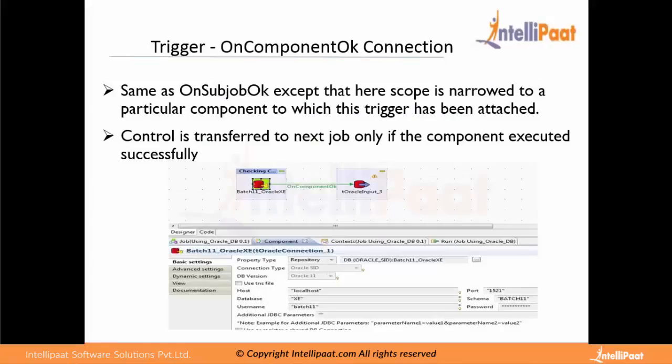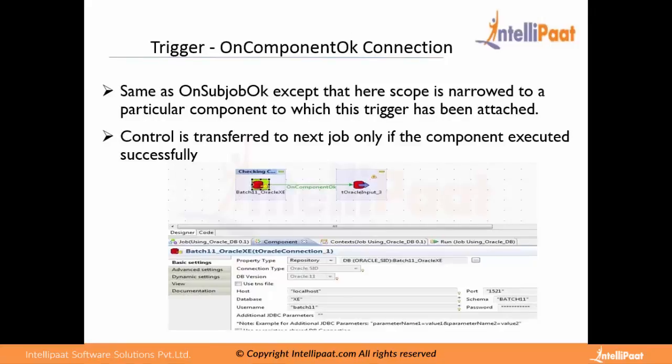Next we have On Component OK. The difference between On Component OK and On Sub Job OK is that On Sub Job OK will initiate the trigger only if all components get executed successfully — even if one component fails, it will not initiate the trigger. Whereas On Component OK initiates the trigger as early as possible — whenever a particular component gets executed successfully — without concerning about other components in the job.